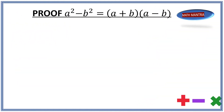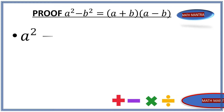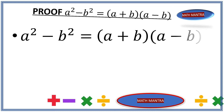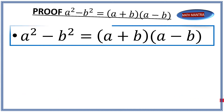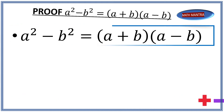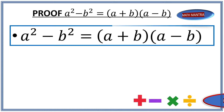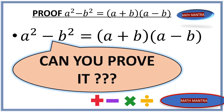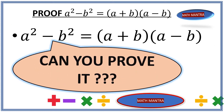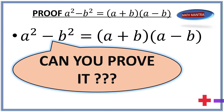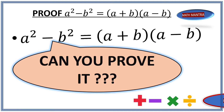Hello everyone and welcome to Math Mantra. Today in this video we will talk about a squared minus b squared is equal to a plus b times a minus b. We may have used this equation in the past, but today we are going to talk about how we can go about proving it. So without further ado, let's get started.